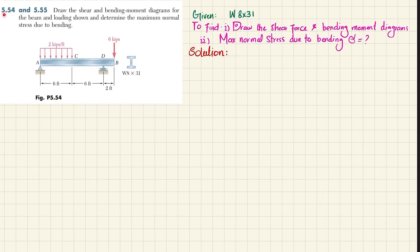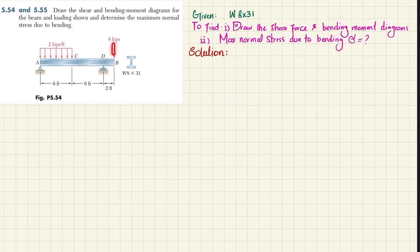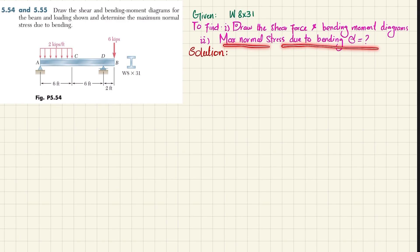Welcome back. Problem 5.54: draw the shear and bending moment diagram for the beam and loading shown, and determine the maximum normal stress due to bending. This is an overhanging beam, W8×31. From A to C we have a uniformly distributed load of 2 kips per foot, and at point B we have a point load of 6 kips. The total length of the beam is 14 feet.